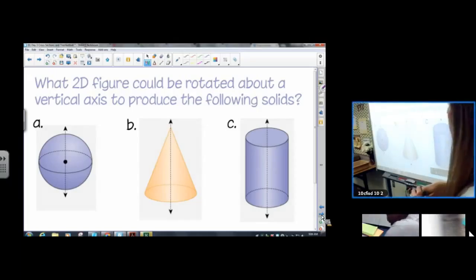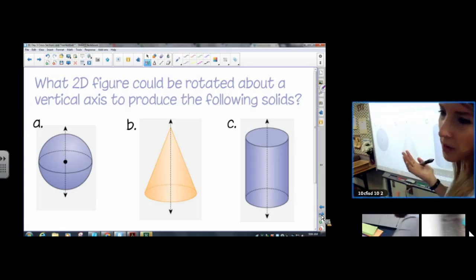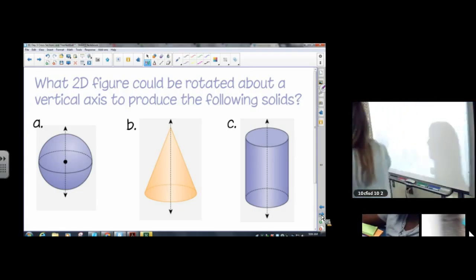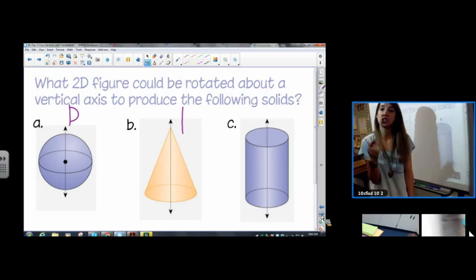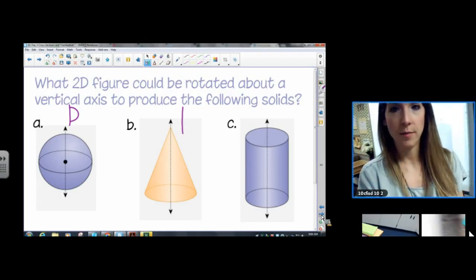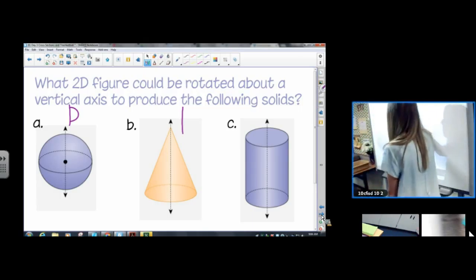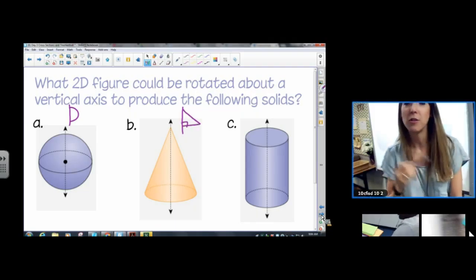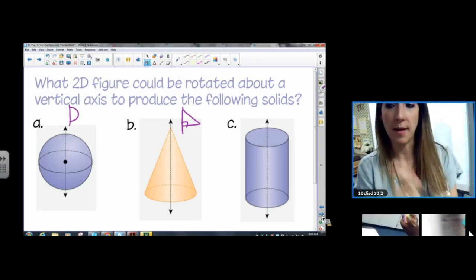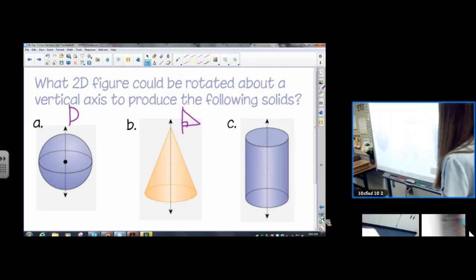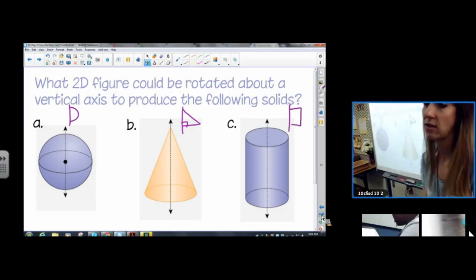What 2D figure could be rotated about a vertical axis to produce the following solids? We already had an experience with each one of these. So A, we already said was a semicircle. B, we did this in class. Now you can't just say triangle for B. That will not work. It has to be a right triangle. And it has to be a right triangle rotated about one of its legs. So if you're asked about B, you have to be really specific about the answer. And then of course C could be any old rectangle. Don't even care as long as you rotate it about one of its sides.